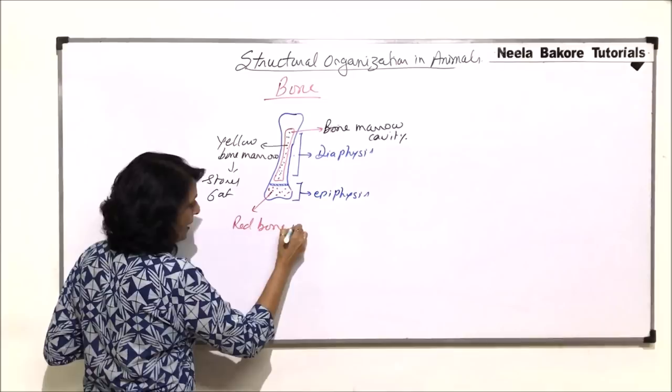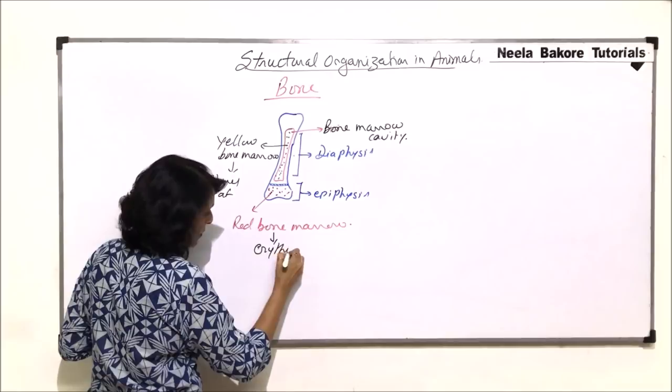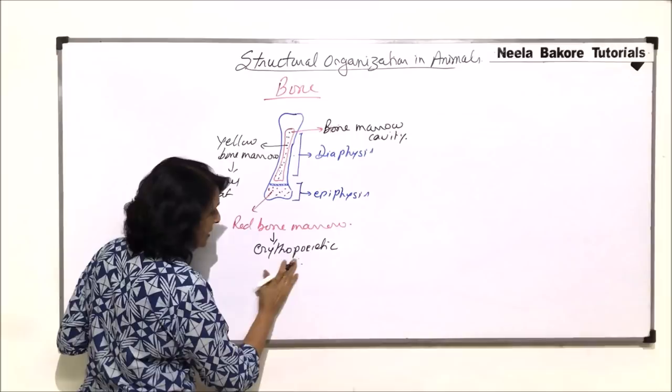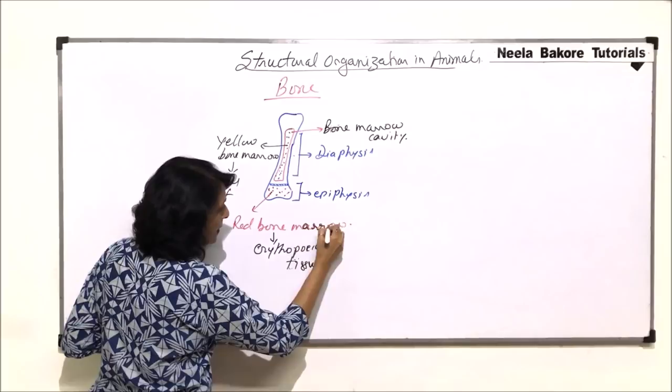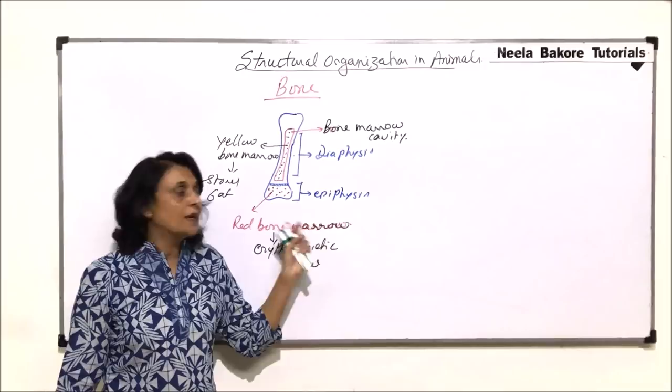Here is the red bone marrow. Red bone marrow is the erythropoietic structure. It is erythropoietic tissue basically. That means red bone marrow is where erythropoiesis takes place. This is the place where RBCs or other blood cells are formed.